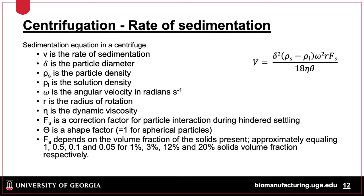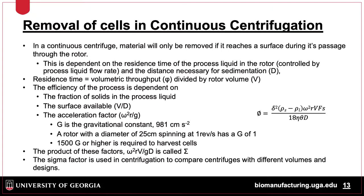The rate of sedimentation is based on a number of factors including the size and density of the particle, the velocity of the centrifuge and radius of the sample from center, as well as the viscosity and shape of the particles. Continuous centrifuges rely on transitive material across the centrifuge rotor surface, so this should be accounted for when determining sedimentation rates.